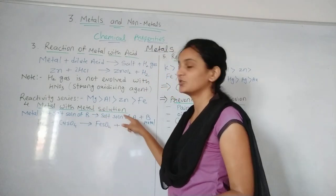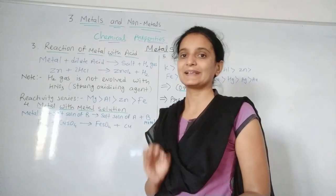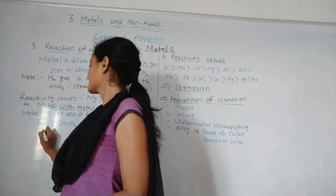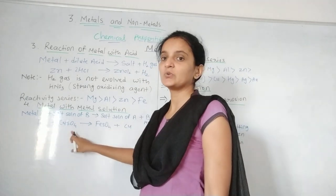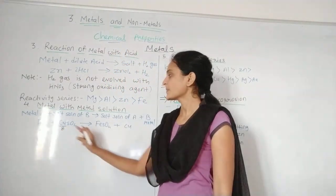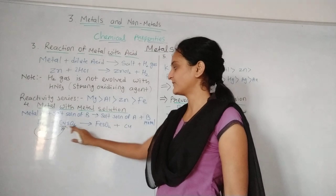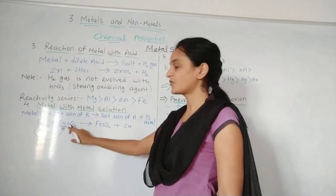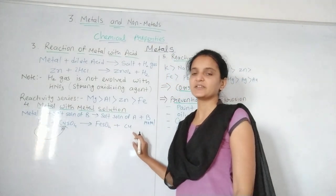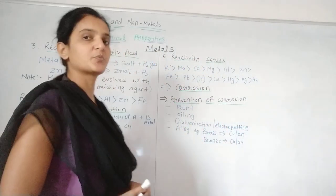You get the salt solution of metal A, and metal B is separated out. For example, if iron (A) reacts with copper sulfate solution (B's salt), since iron is more reactive than copper, iron displaces copper. Instead of copper sulfate you get iron (ferrous) sulfate, plus copper metal is separated out. This displacement reaction we have already seen in the first chapter.